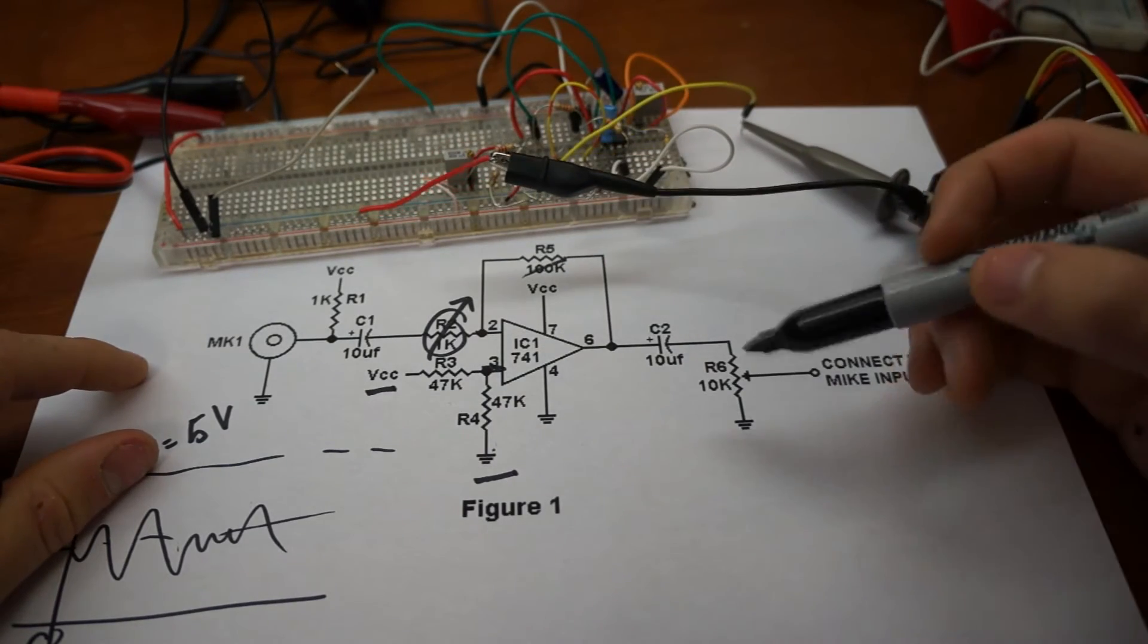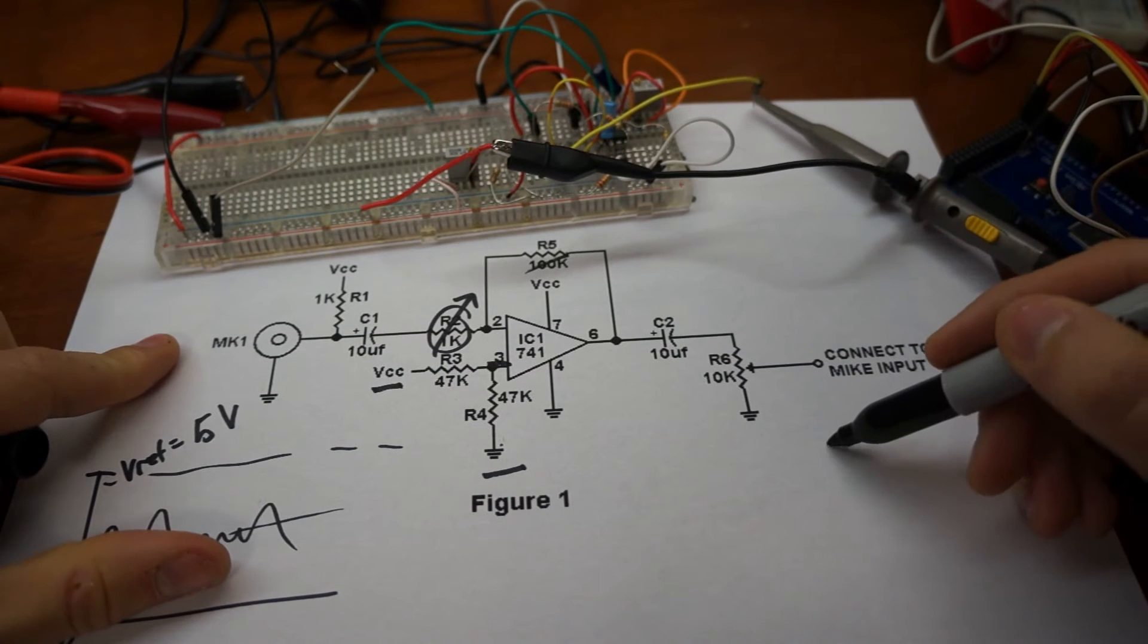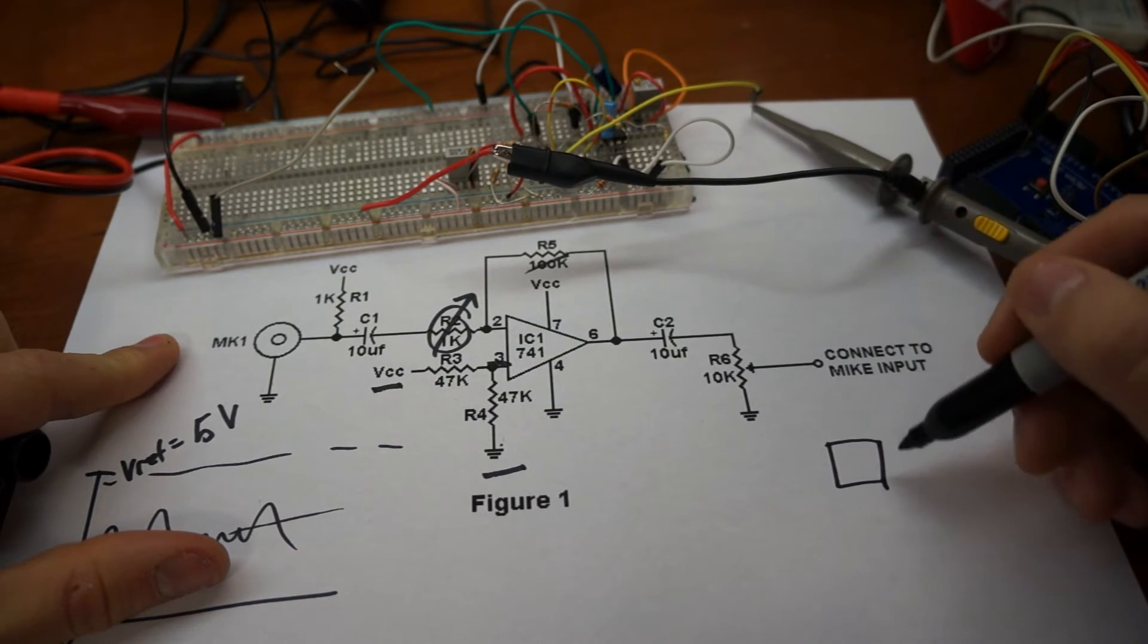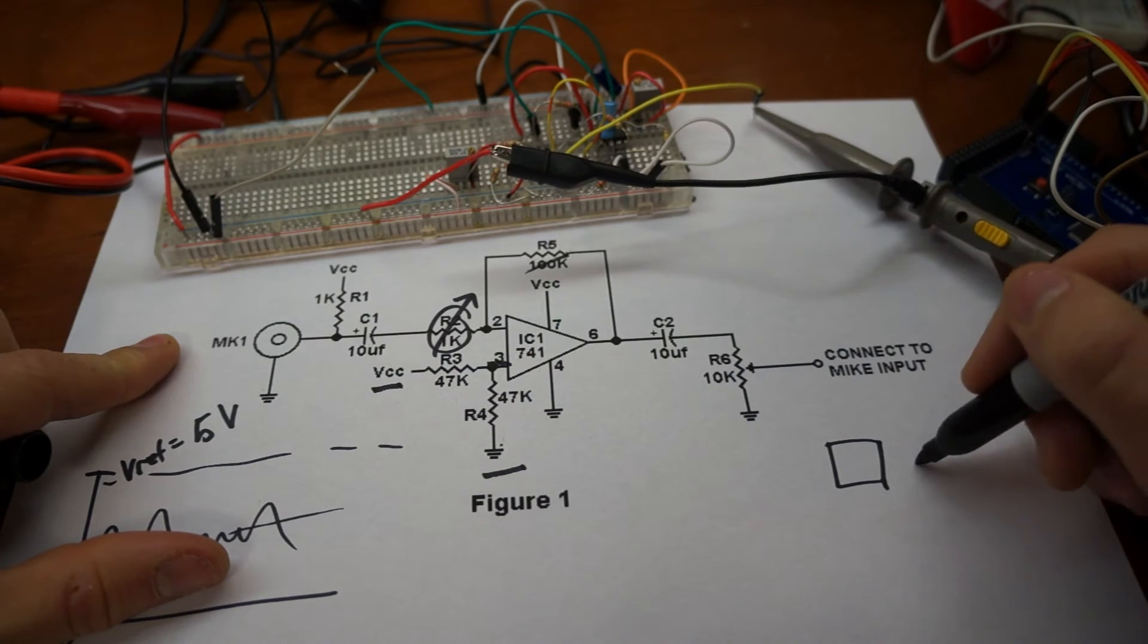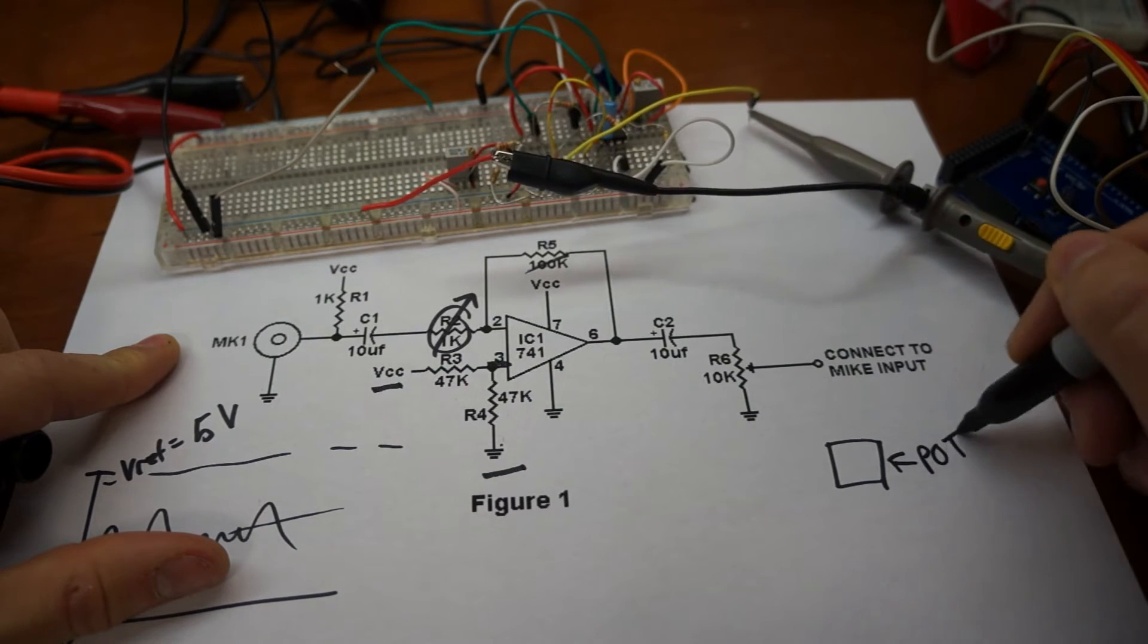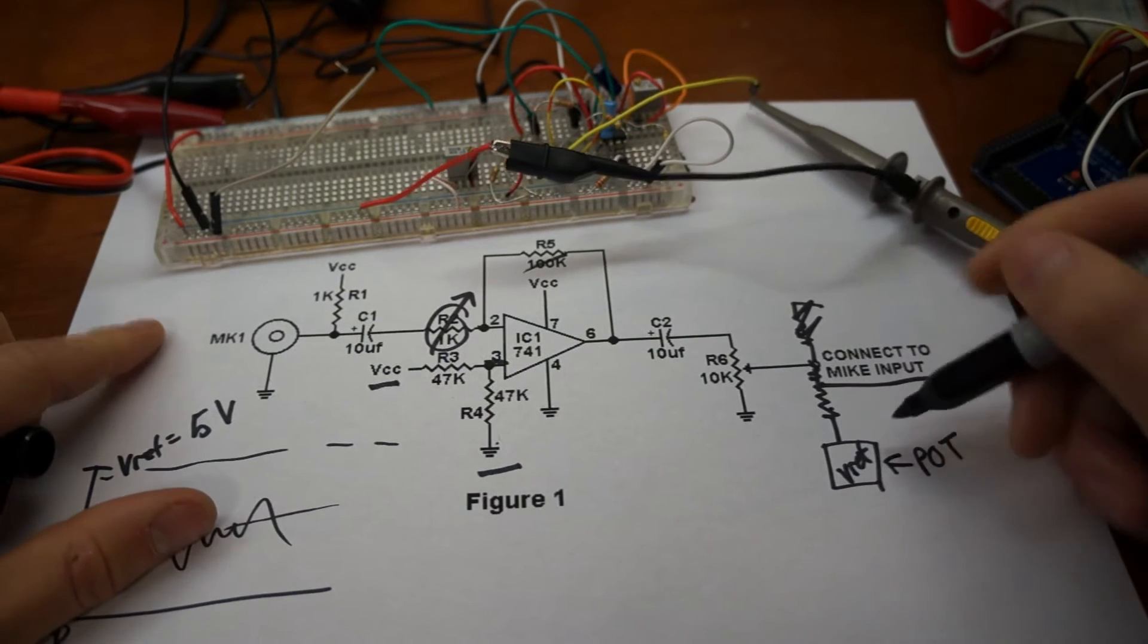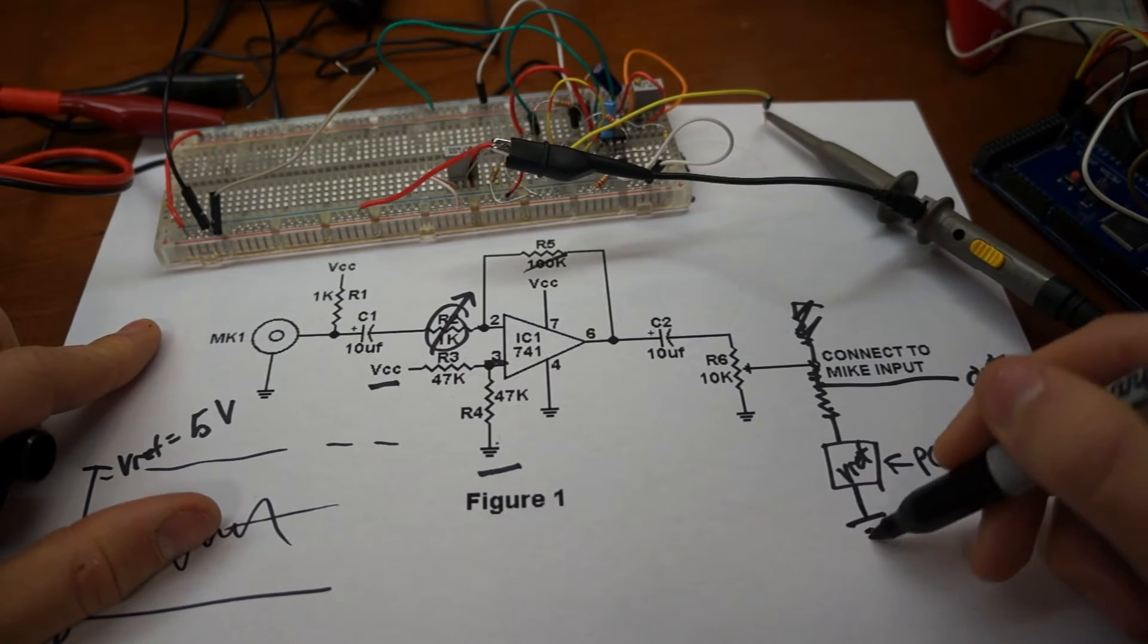And there's actually, the one thing that's not drawn here is, there's also a voltage reference that I'm biasing this signal with, which is also potentiometer dependent. So, there's a potentiometer in here.